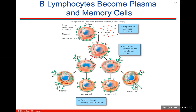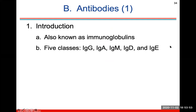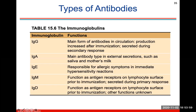B lymphocytes will become plasma and memory cells: antigens bind to antibody receptors, proliferation occurs causing formation of a clone, and these clones go on to become plasma cells and memory cells. Antibodies are also called immunoglobulins, and there are five classes of immunoglobulins. There may be a question about immunoglobulins and their functions, as these are the five types of antibodies in the body — something important to take time to learn.